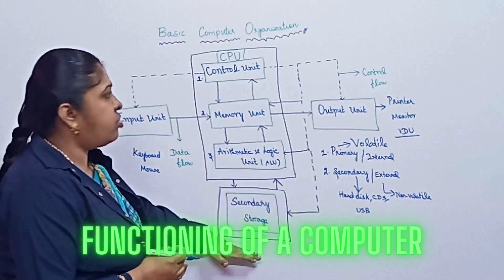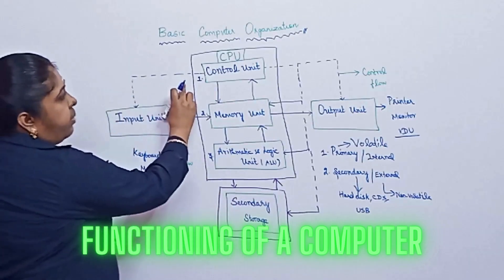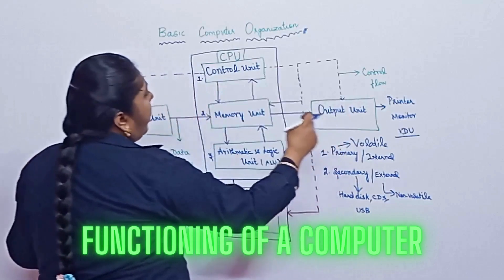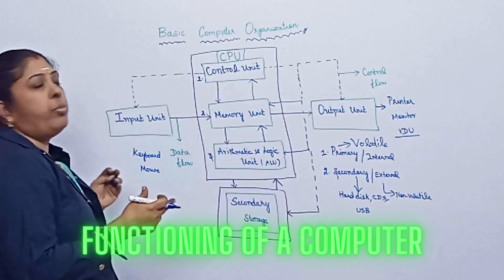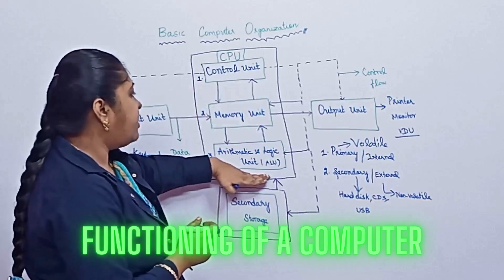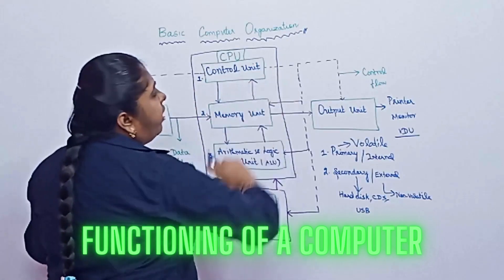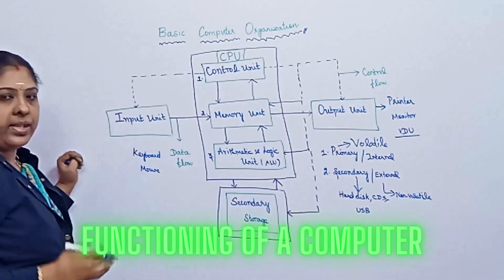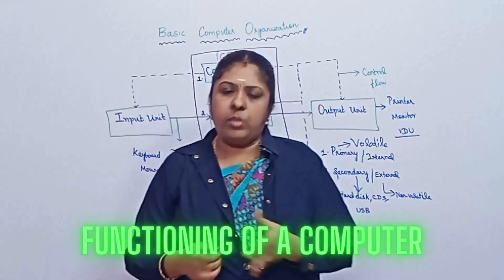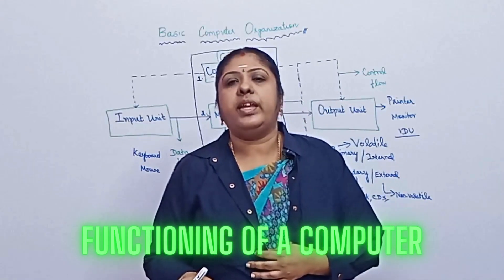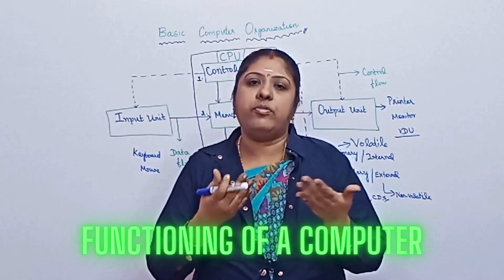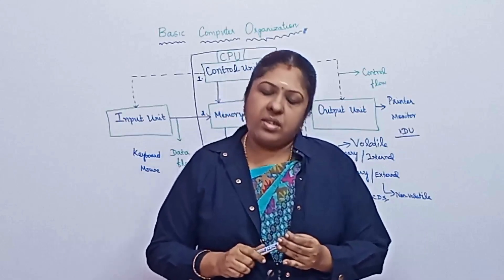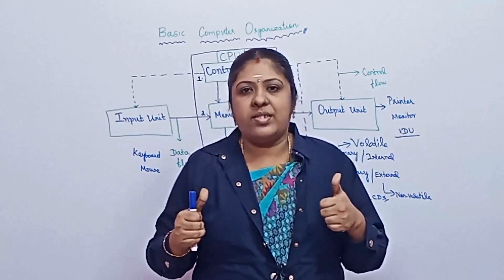The dotted lines represent the control flow — that is, the CPU control unit takes control over the input unit as well as the output unit. Within the CPU, it communicates between the control unit, memory unit, and ALU. After the result is found, the control unit communicates with the output unit and stores the result in secondary storage. These are the basic functions of a computer. Whether it's a small program, a word file, or video editing, the same processing takes place. That's all for today's video. Keep supporting Sai Suryas Academy. Thank you.